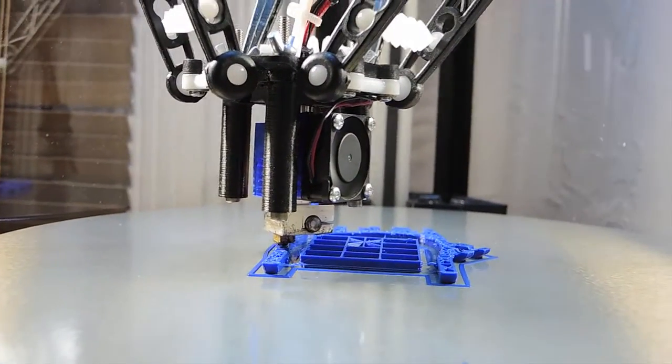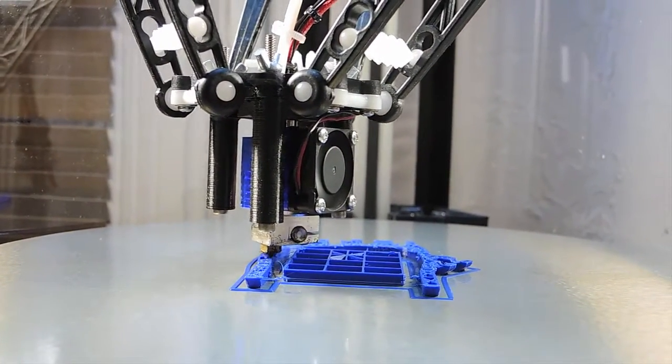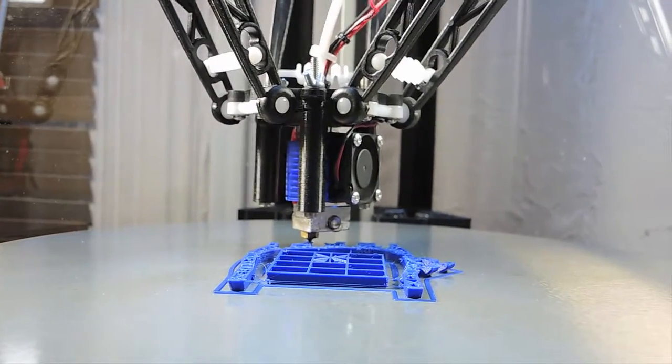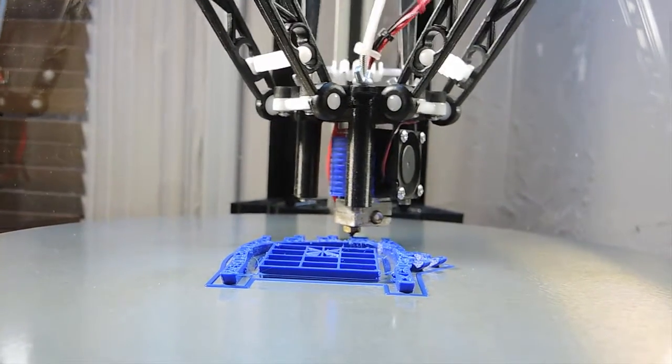The hot end shown here is an E3D V6. It's mounted below the effector plate. Nothing is hardwired. Everything has plug-in connectors.